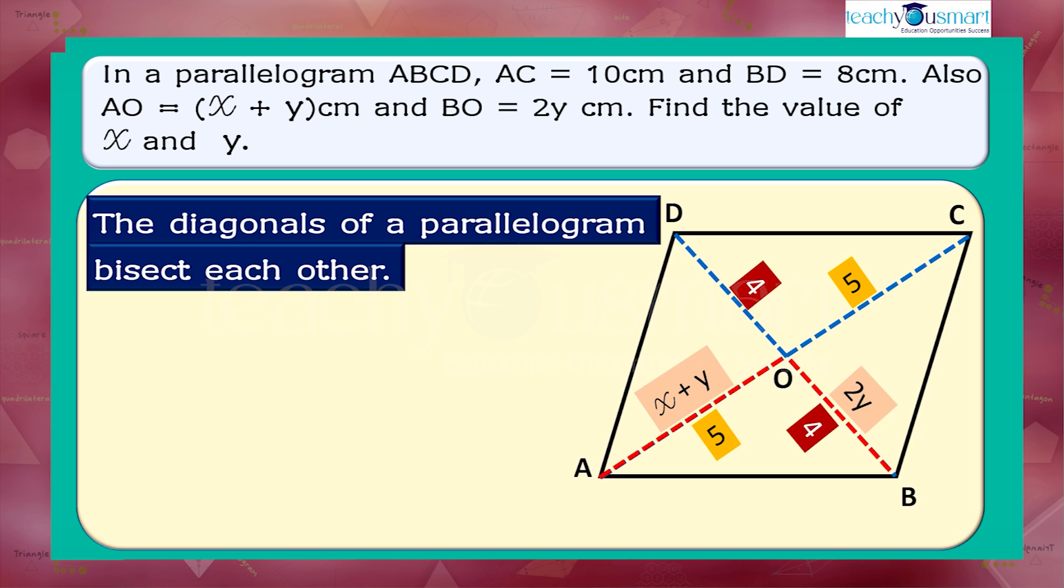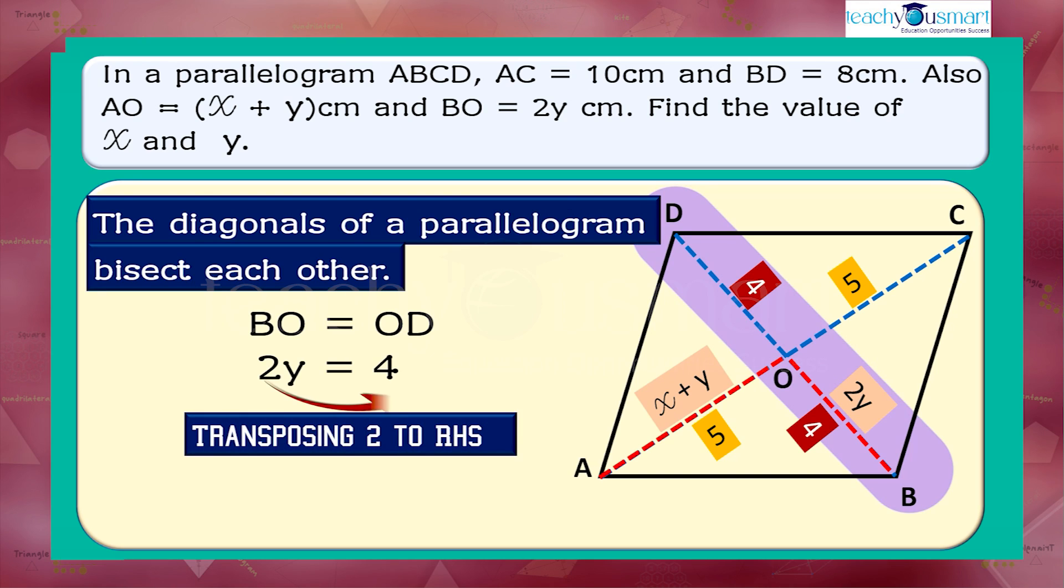Therefore, BO equals OD. That is, 2y equals 4. Transposing 2 to RHS, we get y equals 4 by 2 equals 2 cm.